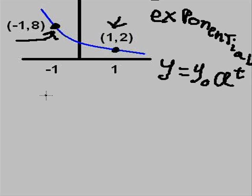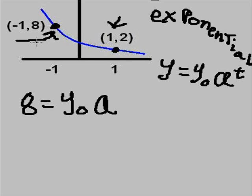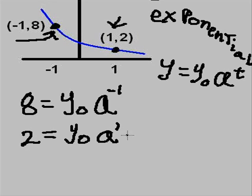Alright, let's plug these values. And there's no 0 in here, so we're going to have to do something different. So we'll start with this t and this y. So 8 equals y sub 0 times a to the negative 1 power. And what about the other point, 1 and 2? Well, y is 2, so 2 equals y sub 0 times a to the 1th power.